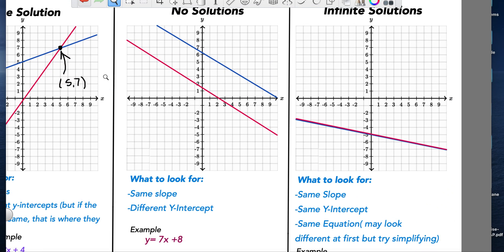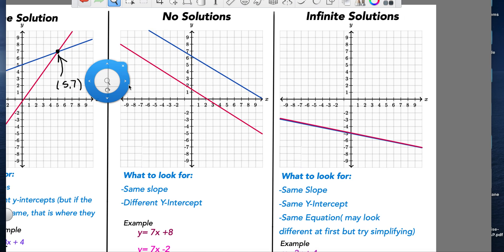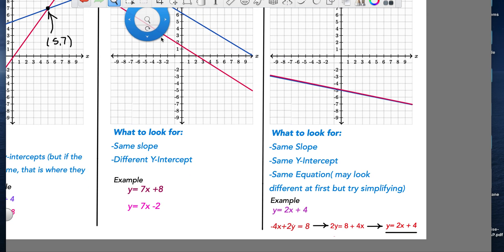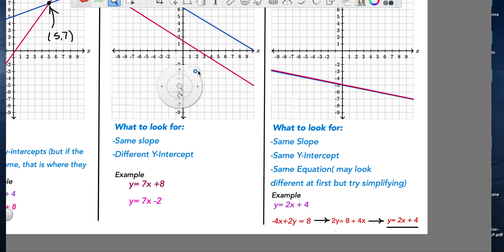Okay, the next example is no solutions. And this is pretty intuitive. If a solution occurs when the lines intersect, then there will be no solution if the lines never intersect. And the lines will never intersect if they're parallel. So this graph is an example of no solutions. But from an equation standpoint, we need to look down below at these characteristics. What you should look out for is the same slope, but different y-intercepts.